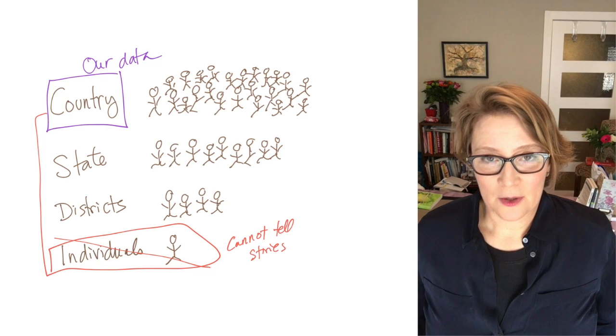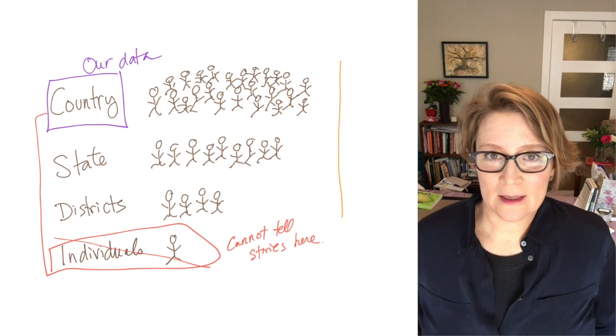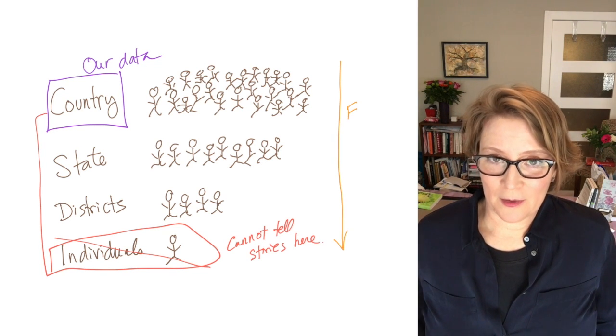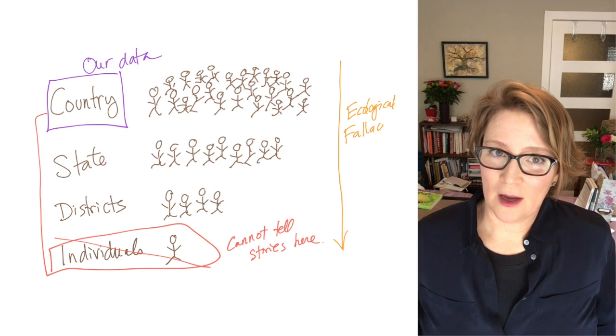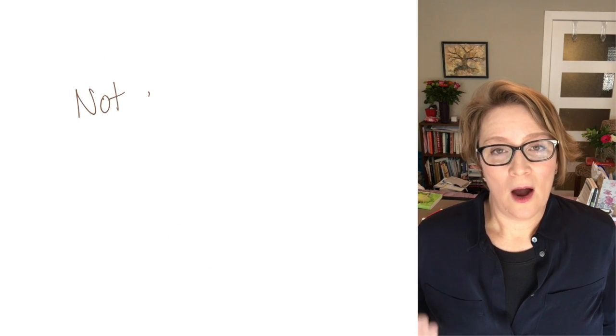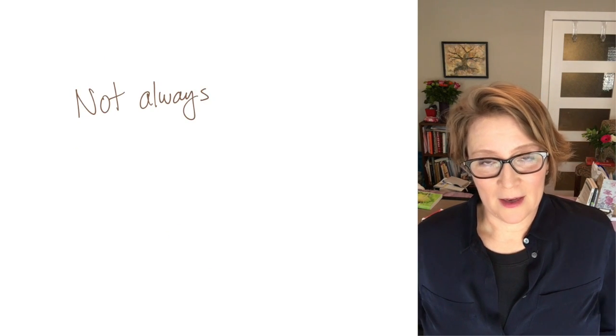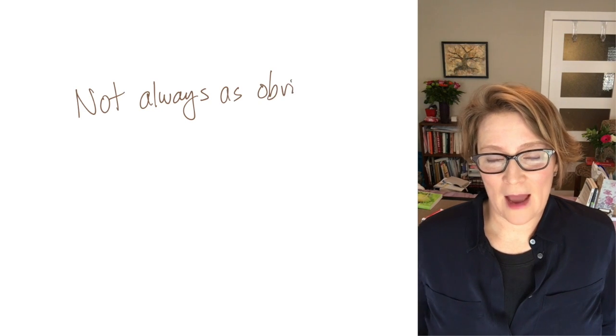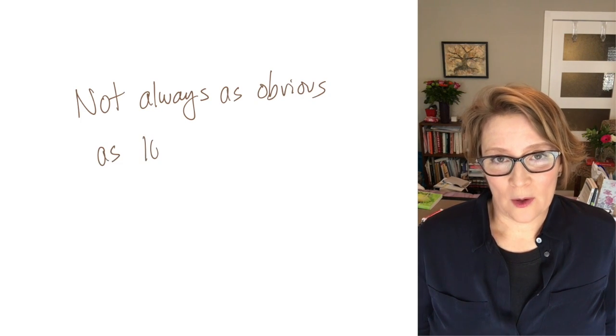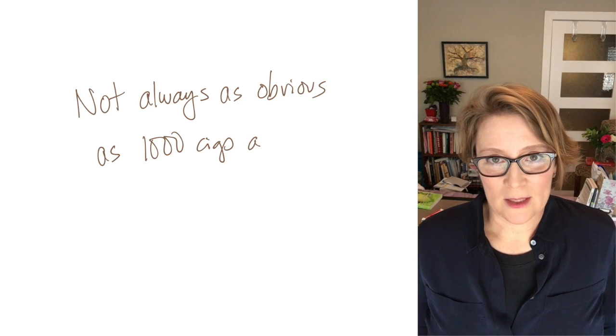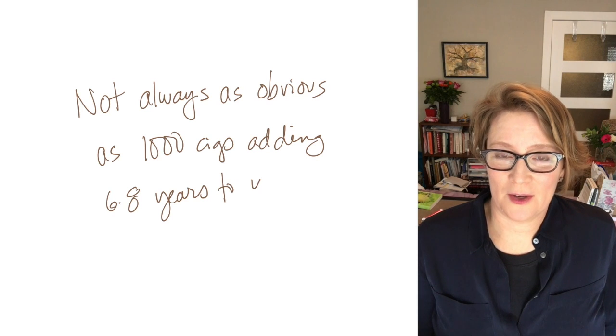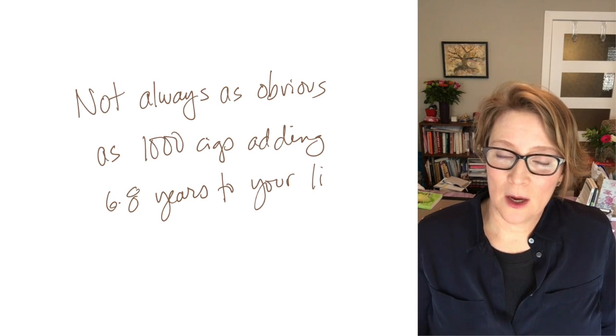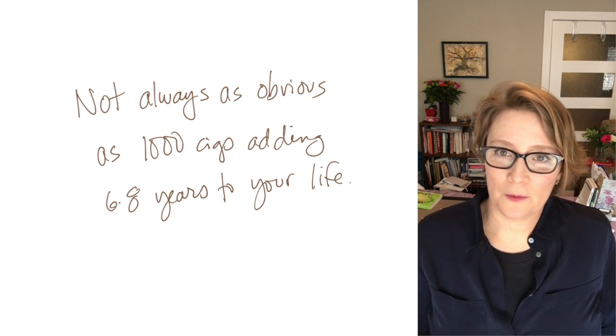Moving down to a finer level of analysis than the level that your data is on is part of what's called the ecological fallacy. Now in this example, it's really obvious to many of us that there's a problem—that we don't believe that a thousand cigarettes a year will increase your life by 6.8 years. We can spot this ecological fallacy because it goes against what most of us hold as a worldview.